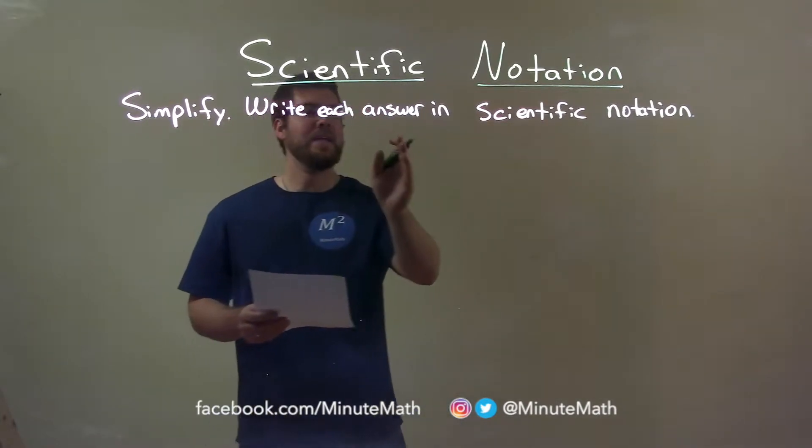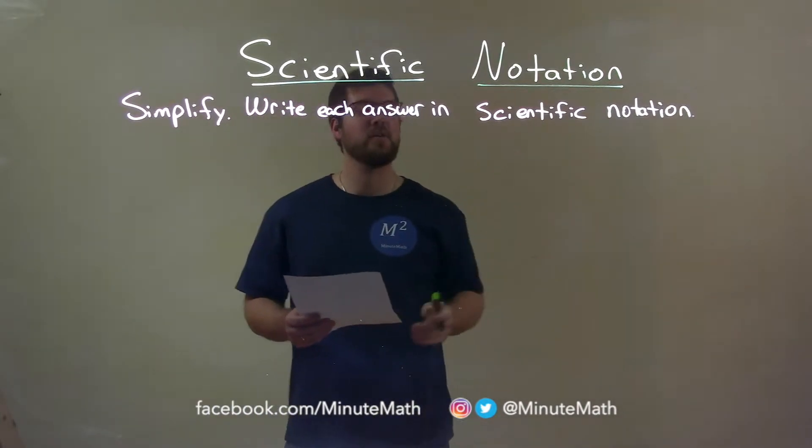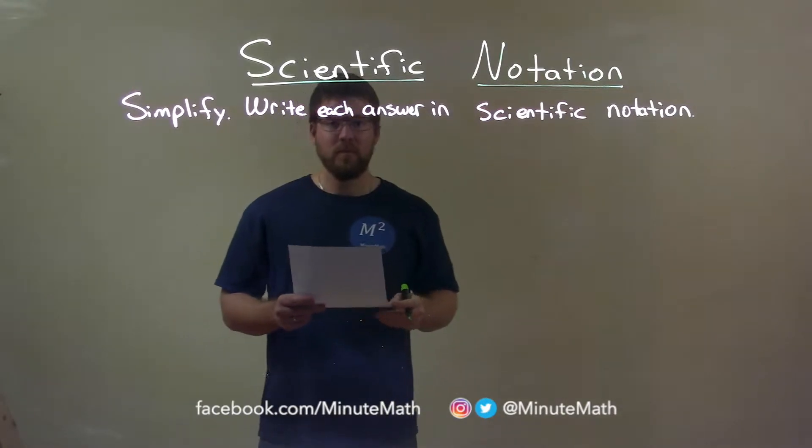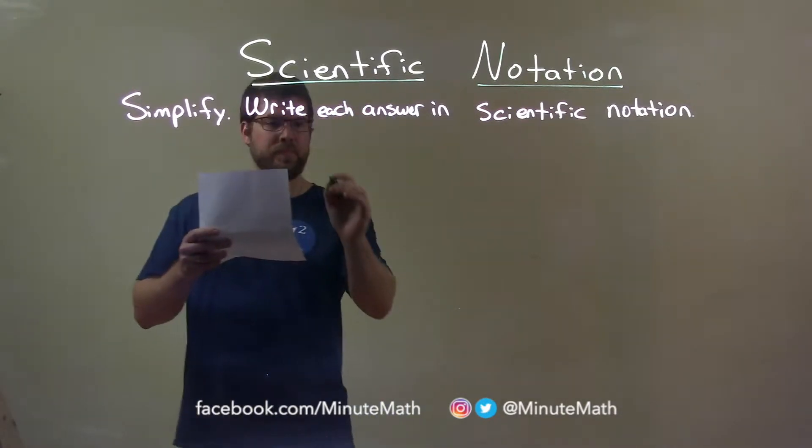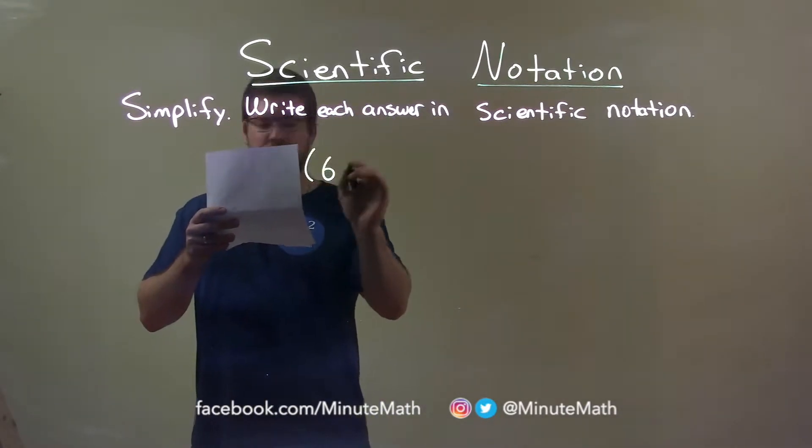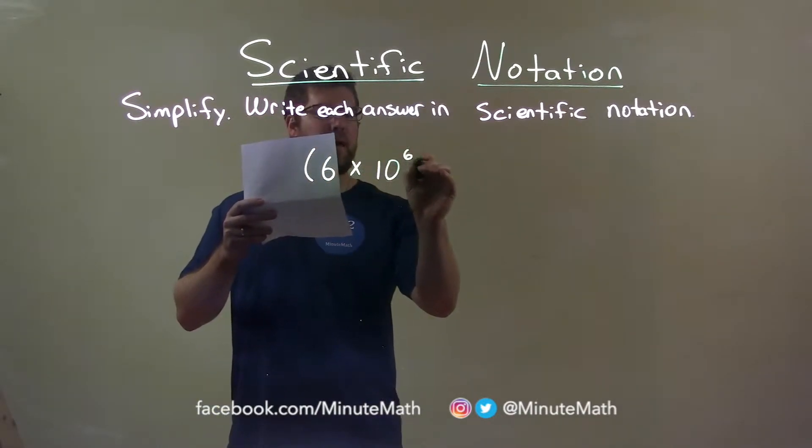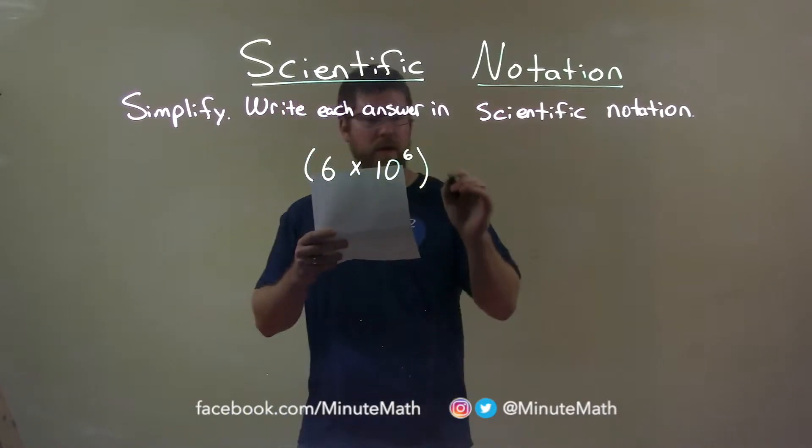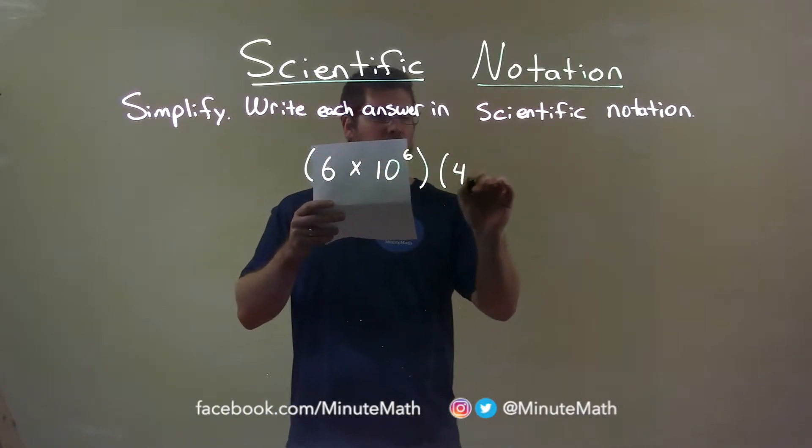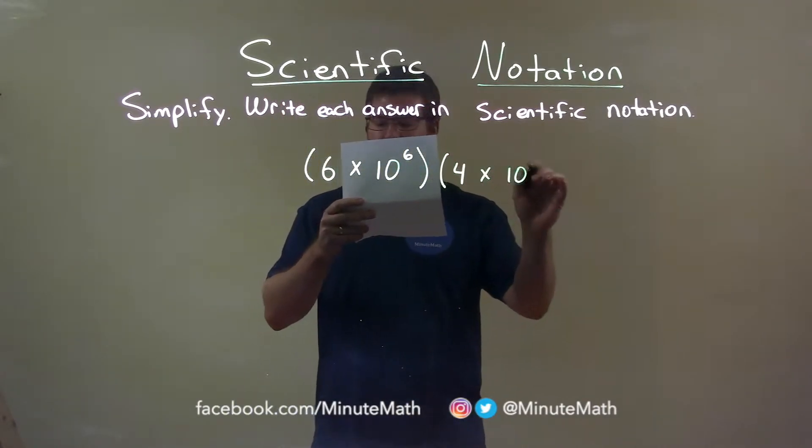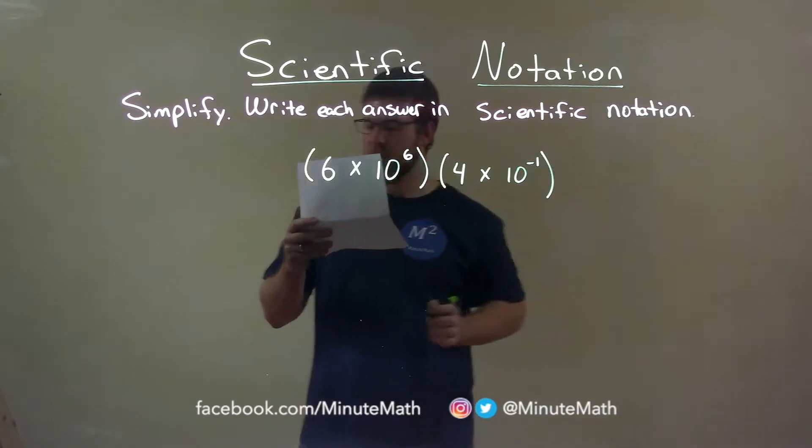I'm going to simplify and write each answer in scientific notation. So, if I was given this problem, 6 times 10 to the sixth power, and that gets multiplied by 4 times 10 to the negative 1 power.